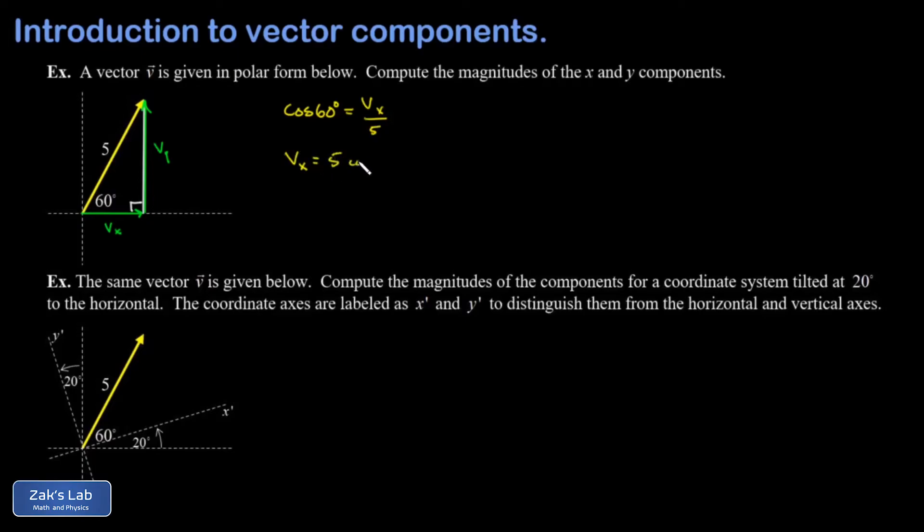We can quickly solve for that adjacent side—it's five times cosine of 60 degrees and we get an answer of 2.5 for the magnitude. We apply the sine function to deal with the vertical component: the sine of 60 is the opposite over the hypotenuse. We multiply by the hypotenuse and we get vy is 5 sine of 60 degrees. To three sig figs we find that has a magnitude of 4.33.